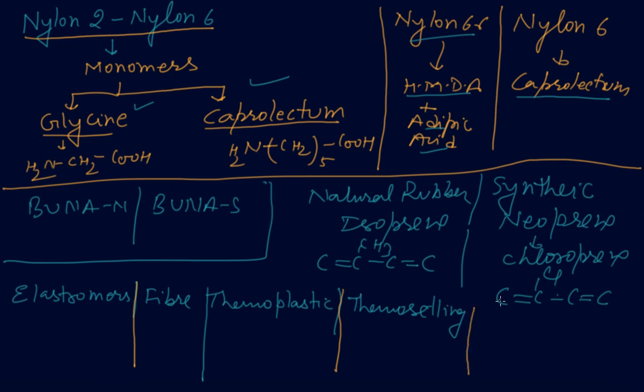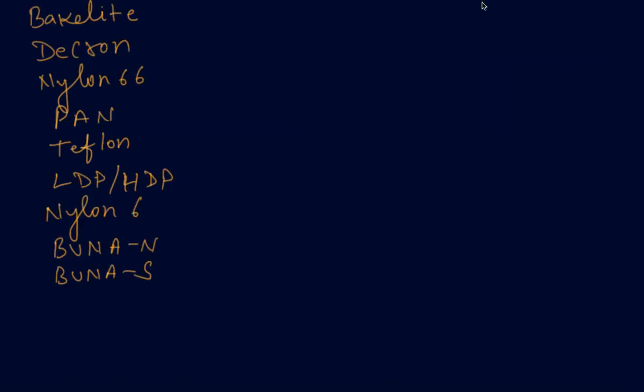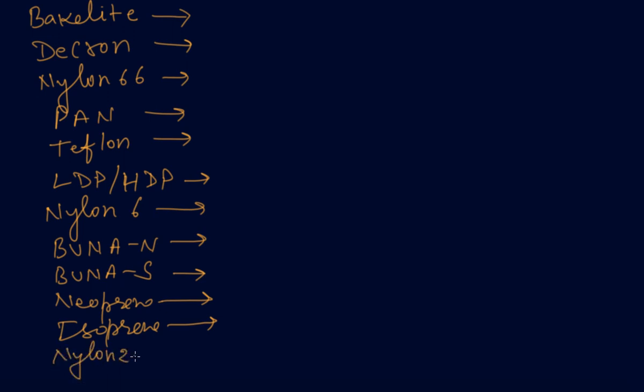And monomers of each and every line - if you make command on the chapter very well, my dear students, here some polymers I have written and you have written their monomers and uses. Then the chapter will be in your grasp. Bakelite, Dacron, Nylon 6-6, PAN, Teflon, LDPE/HDPE, Nylon 6, Buna-N, Buna-S, neoprene, isoprene - their uses also. And Nylon 2-Nylon 6, we learn their monomers too. And the chapter will be in your command. Thank you very much. We will meet in the next chapter, that is chemistry in everyday life.